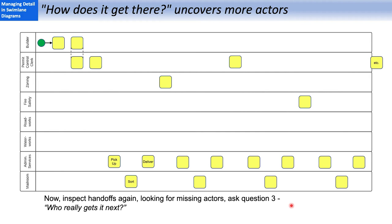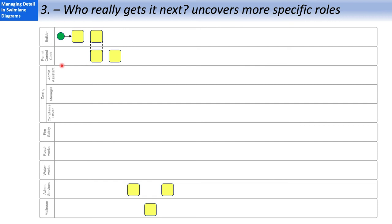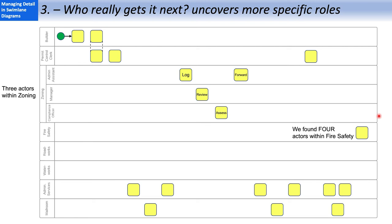Now, we're going to go back and look at those handoffs again, looking for missing actors, asking question three, which is who really gets the work next? For instance, who really gets it in zoning? The answer was, it goes to somebody called the zoning compliance officer, the ZCO. But does it really go to them? Well, the answer, of course, is no, because otherwise I wouldn't have a story to tell. It turned out that within zoning, there were three distinct actors, and you want to uncover every actor. We've used the BPMN pool to illustrate actors within a department. So admin assistant logs it, manager reviews it, the compliance officer assesses it, and then it moves on. Going back through our delivery cycle to the permit control clerk, and eventually into fire safety, where we found four additional actors, and the same thing happened in all of these other major departments.